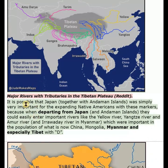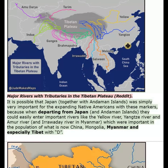It is possible that Japan together with Andaman Islands was simply very important for the expanding Native Americans with these markers, because when departing from Japan and Andaman Islands, they could easily enter important rivers like the Yellow River, Yangtze River, Amur River, and Irrawaddy River in Myanmar, which were important in the population of what is now China, Mongolia, Myanmar, and especially Tibet with haplogroup D.